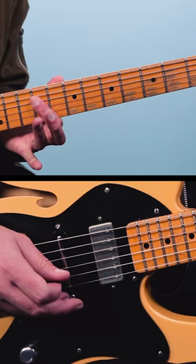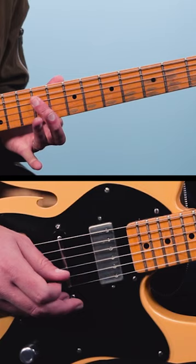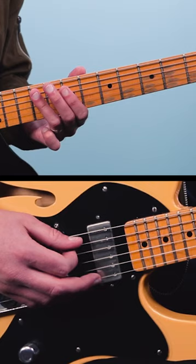Play those and do a pull off to 9, and then go back up, then go to the 5th and 4th strings and play 9 to 7 like this, and then back up.